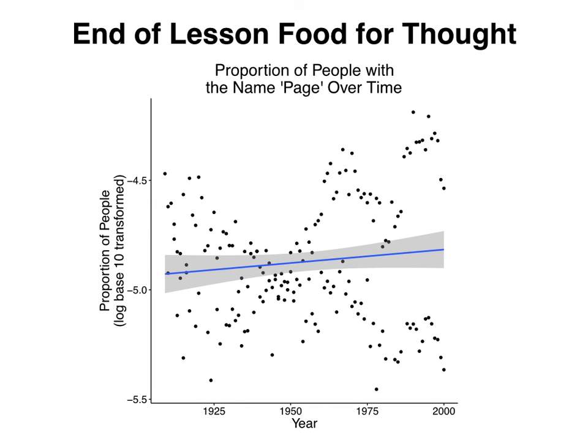At the end of the lab, you should have a figure something like this, only for your name. My figure is a little cleaned up, so it may not look exactly the same as yours. The code for how to make a figure like this is available online. In the lab, we found that for Page, there was no effect of year.